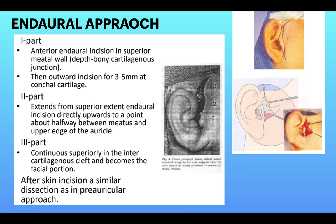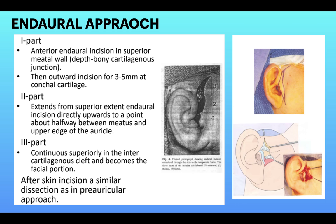Endoral approach — this approach has three parts. Part 1 is an anterior endoral incision in the superior meatal wall with an outward incision of 3 to 5 mm at the concheal cartilage. Part 2 extends from the superior extension of the endoral incision directly upward to a point halfway between the meatus and the upper edge of the auricle. Part 3 is a continuation superiorly in the inter-cartilaginous cleft, becoming the facial portion. After that, the layers are the same as the pre-auricular approach.